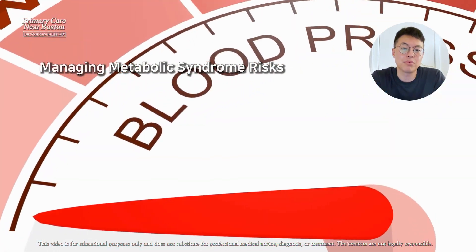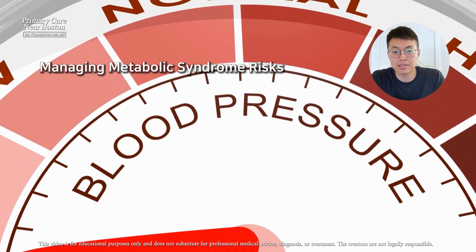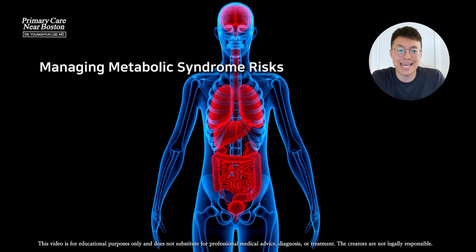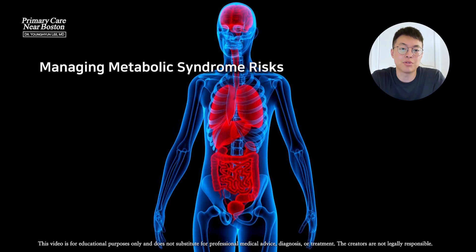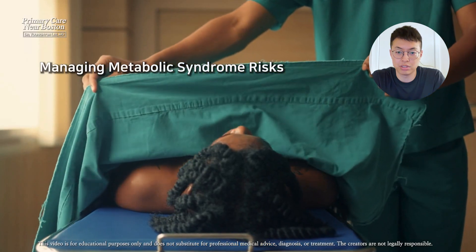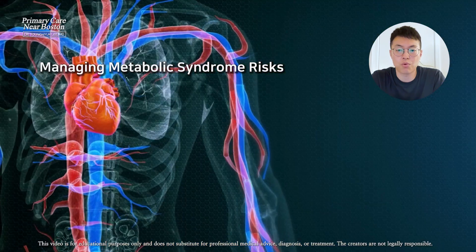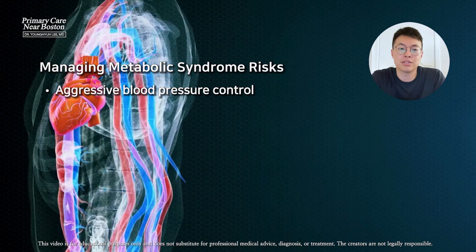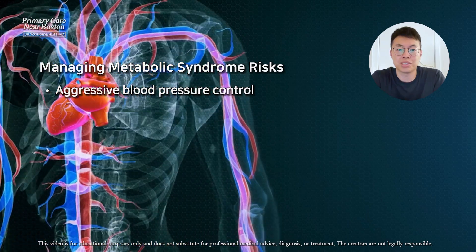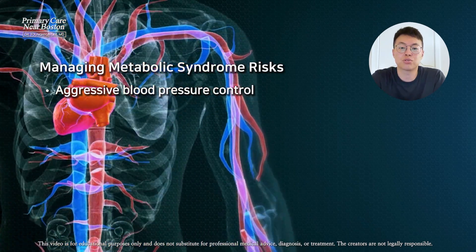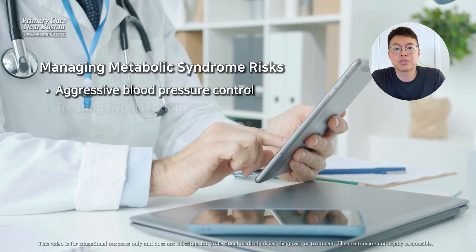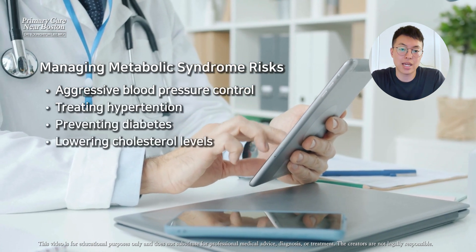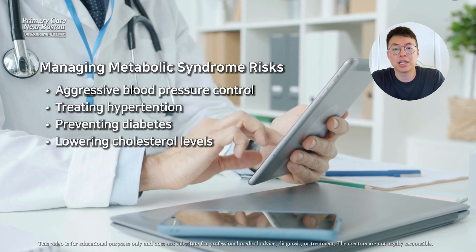Metabolic syndrome also increases the risk of poorly controlled hypertension, organ damage, and all-cause mortality. Therefore, managing blood pressure aggressively and addressing all cardiovascular risk factors is crucial. This includes treating hypertension, preventing diabetes, and lowering cholesterol levels.